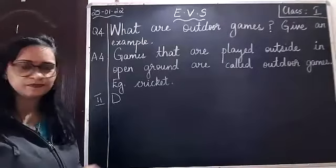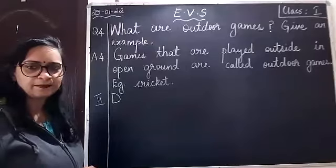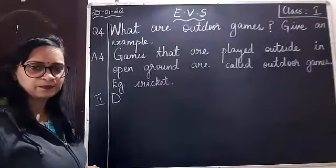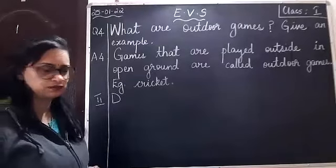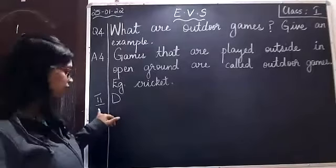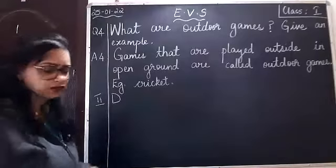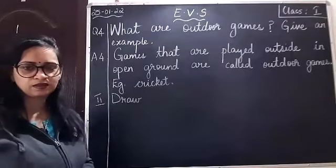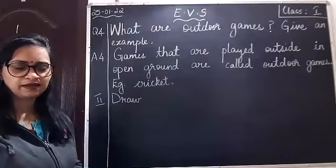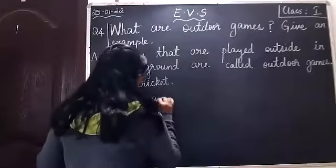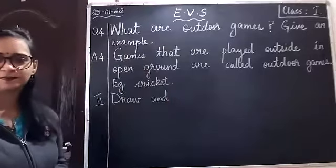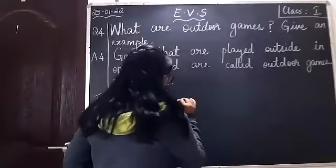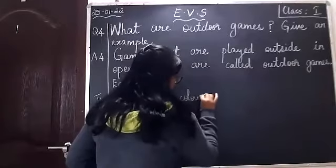Cricket spelling is C-R-I-C-K-E-T. Then put a full stop. Leave two lines, write Roman number two in the margin, then take the question down. Capital D-R-A-W. Draw. Leave a finger space, write down A-N-D. And leave a finger space, write down C-O-L-O-U-R. Color.